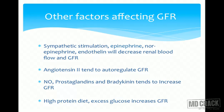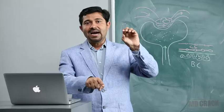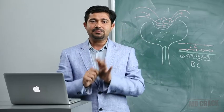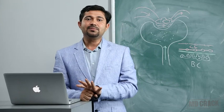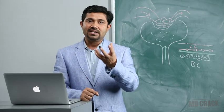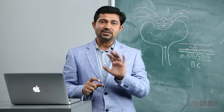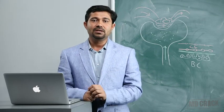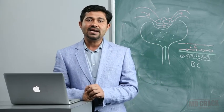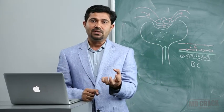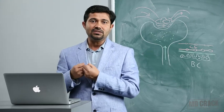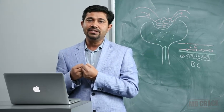Because the afferent arteriole is not constricted, GFR does not decrease much. With efferent arteriole constriction, pressure in the glomerular capillaries is maintained and GFR is preserved. The filtrate continues to be formed and the nephron can remove metabolic waste products. At the same time, the body needs to conserve fluid because of decreased blood volume.